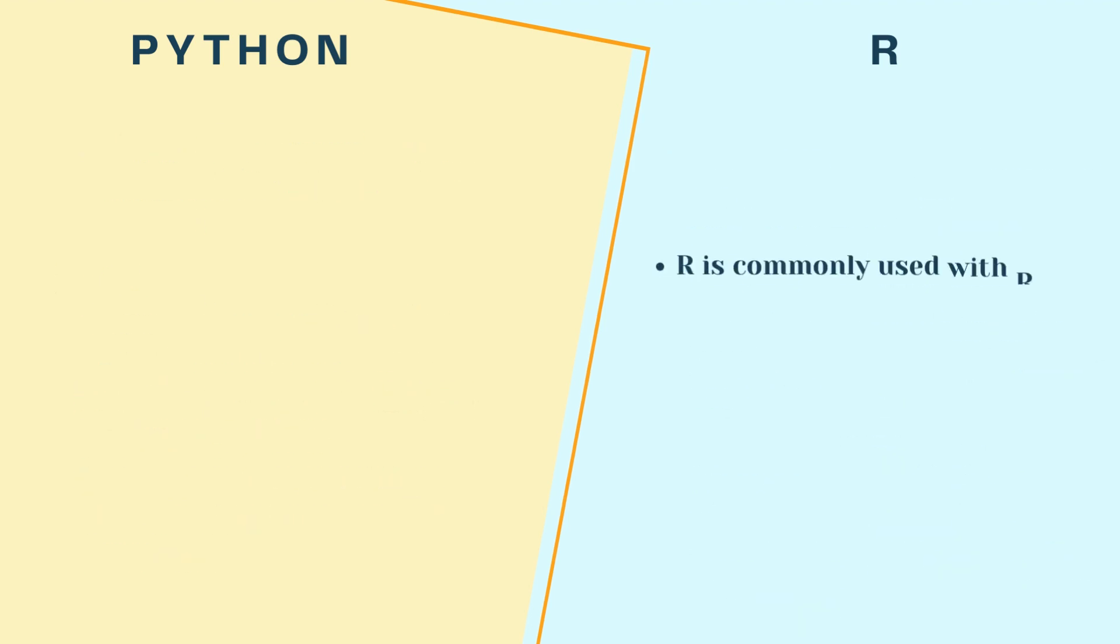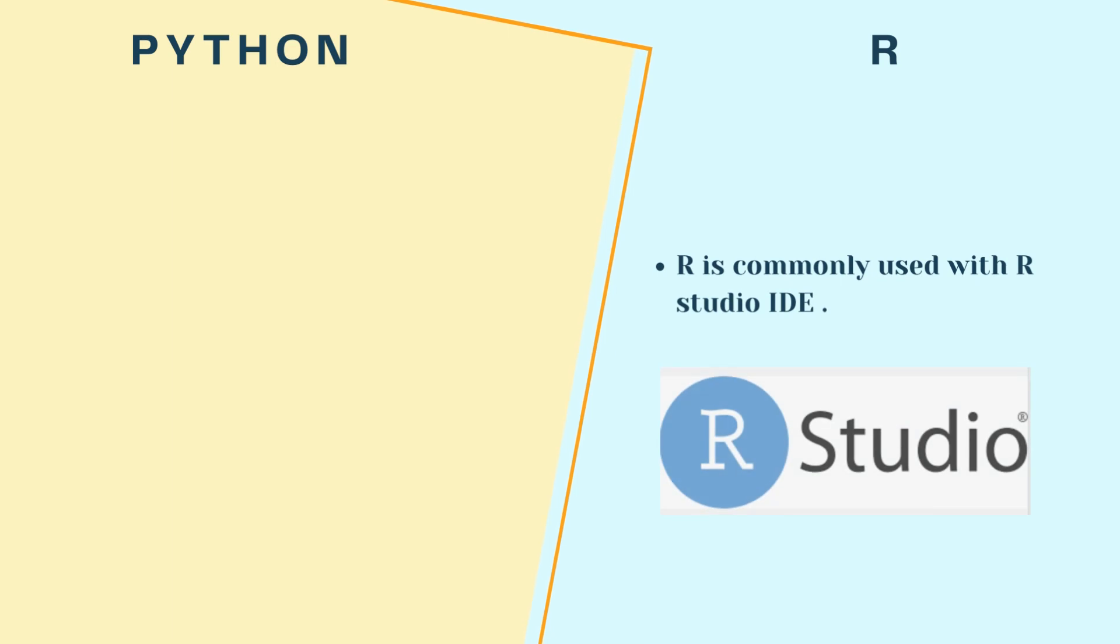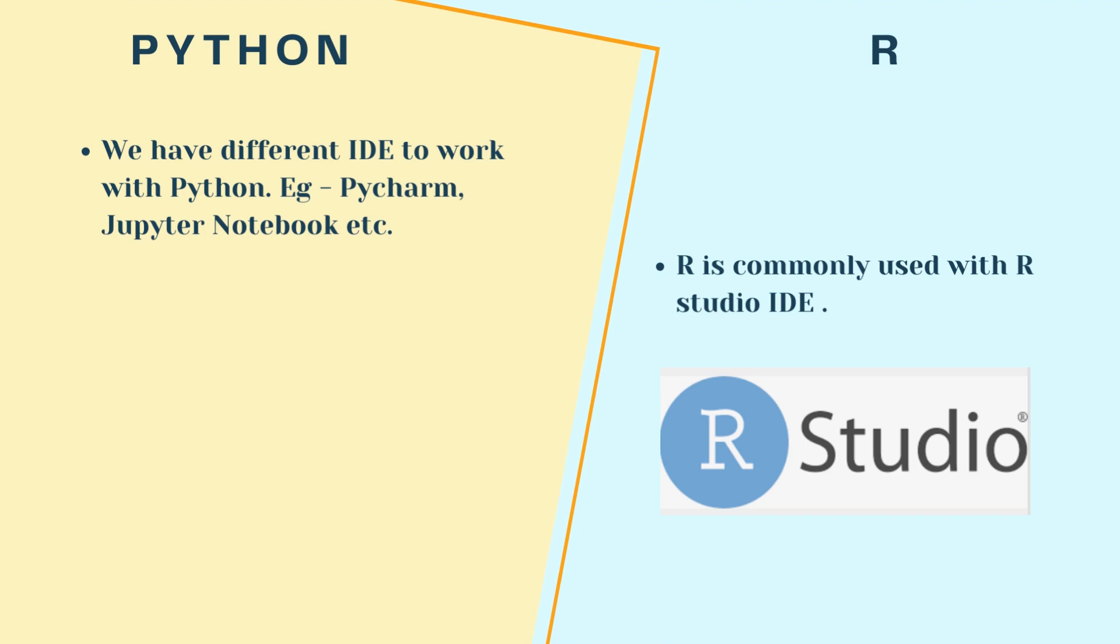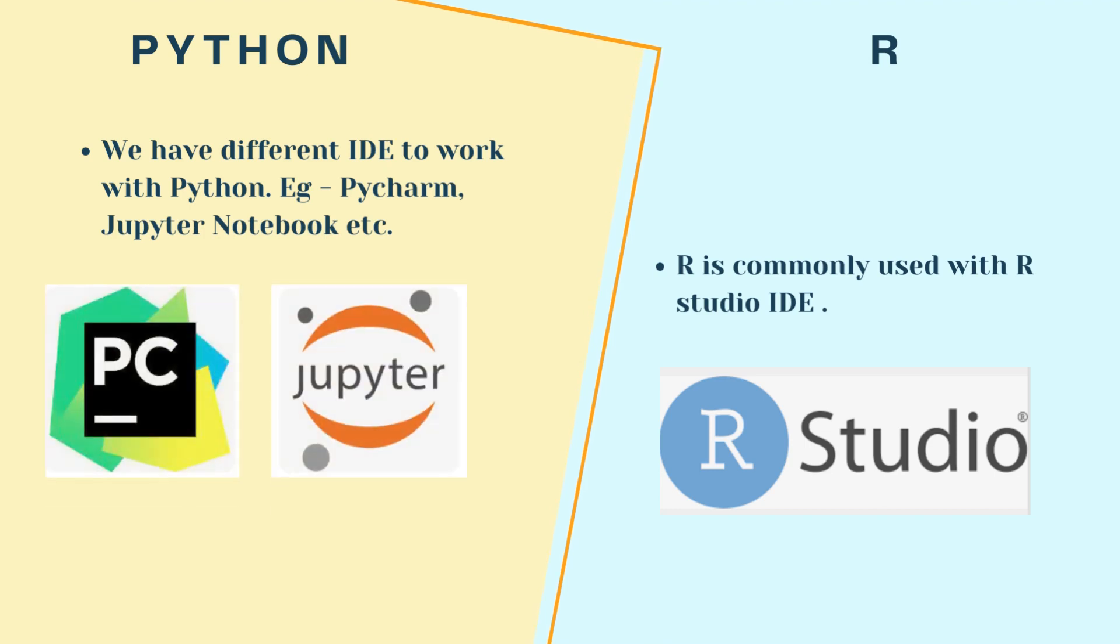R is commonly used using R Studio IDE, whereas we have different IDEs to work with Python, for example, PyCharm, Jupyter notebook, etc. Mostly for data analytics and data science, Jupyter notebook is used.